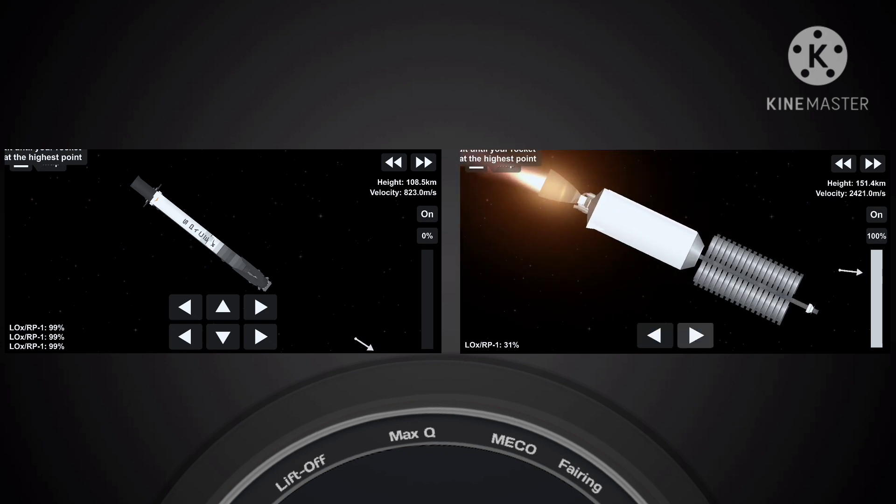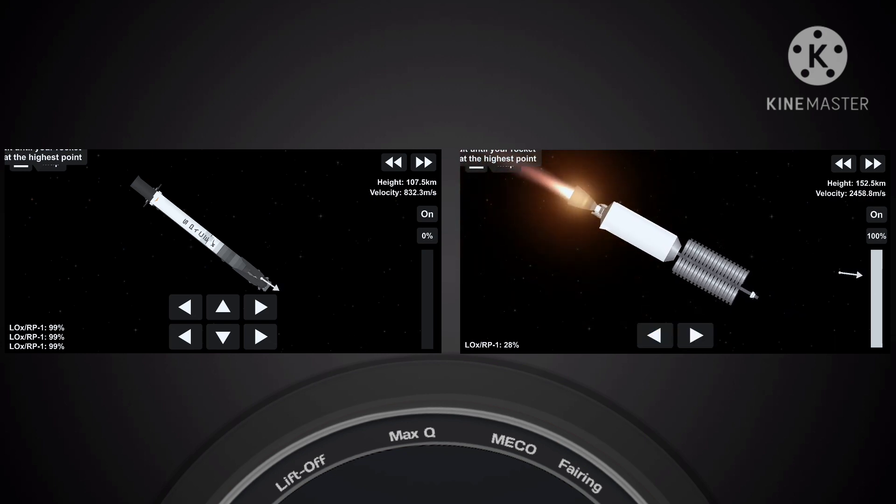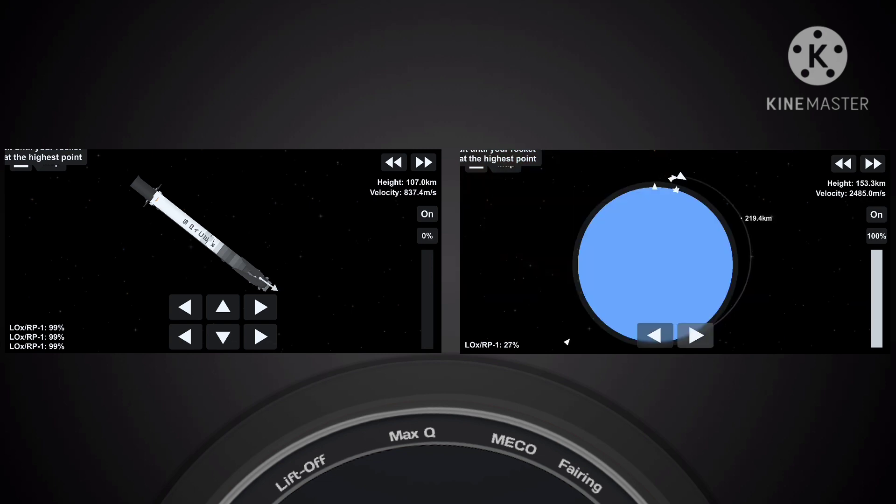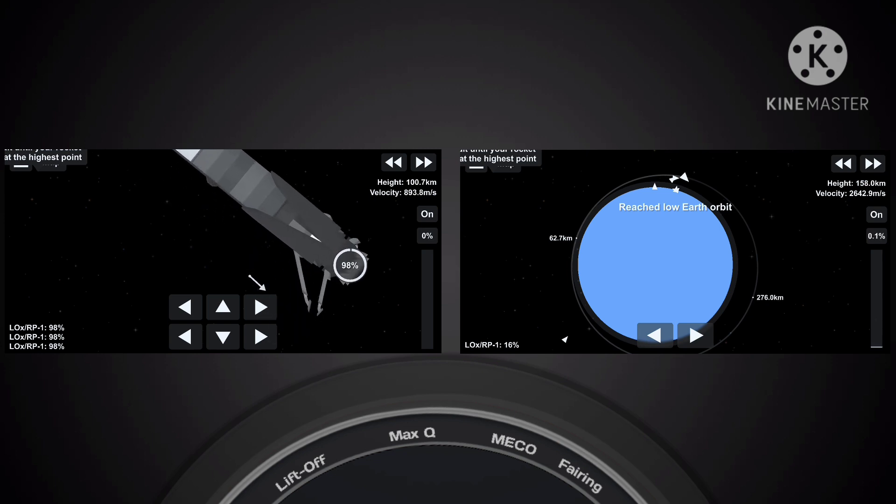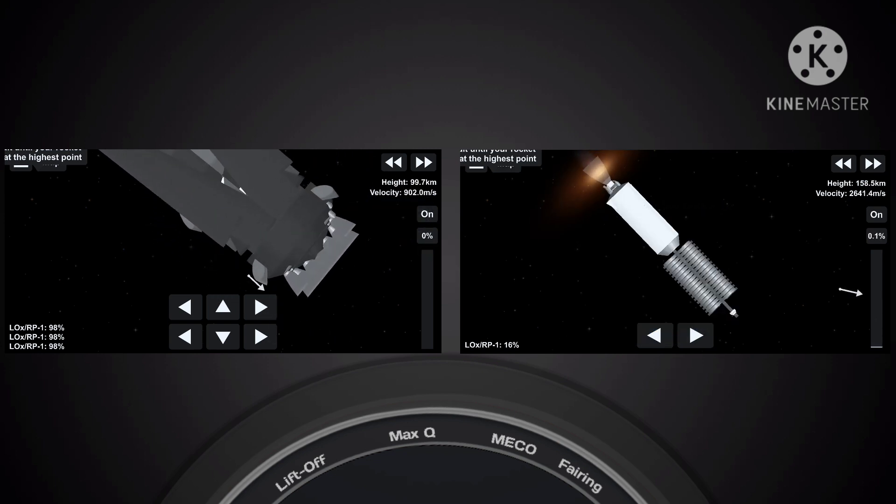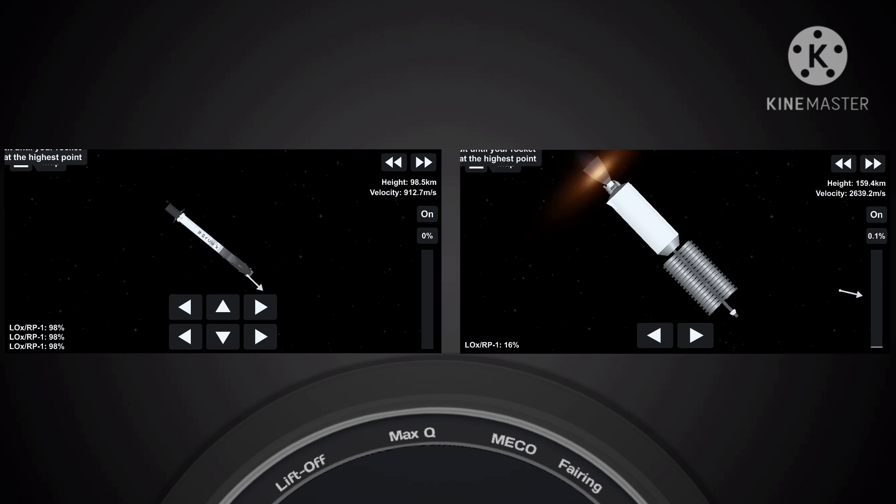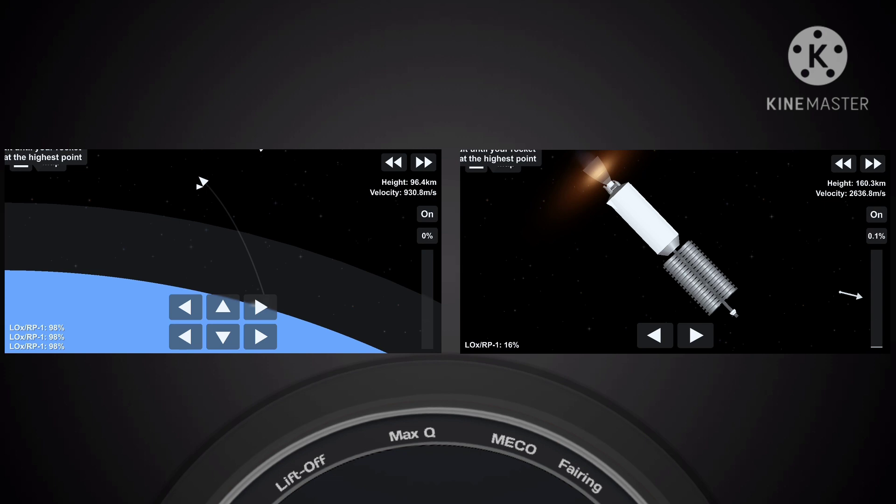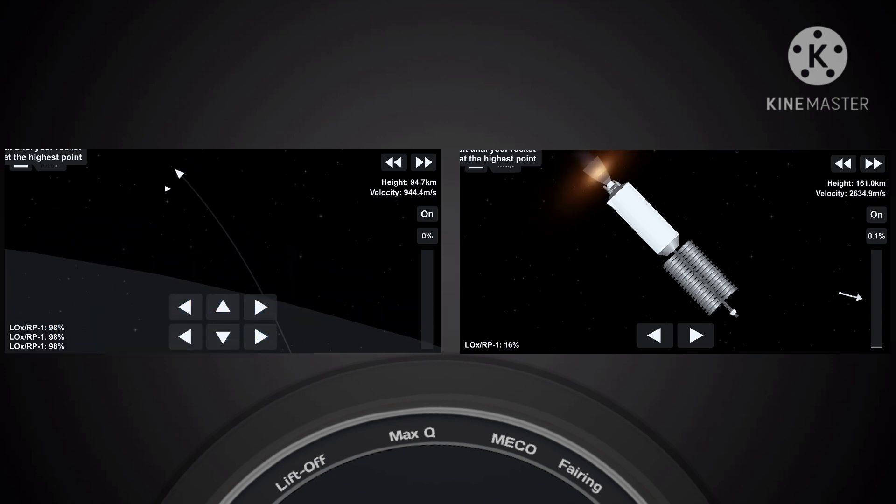Just after T plus five minutes, we're just about a minute away from the entry burn beginning on the first stage. The vehicle second stage is on nominal trajectory. That entry burn will last about 22 seconds. You can see the first stage, the grid fins are deployed, but they don't start steering until after entry burn because it requires the atmosphere air to be flowing through those grid fins.